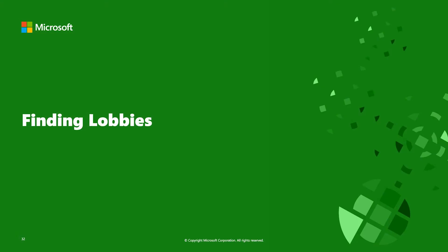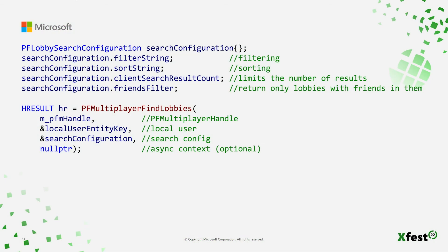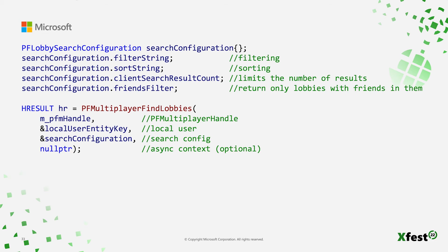Finding lobbies is a key feature of any lobby service. When searching, we can specify how to filter and sort results, limit how many results we get back, and even return only lobbies that have a user's friends in them. Once we get back the state change for the completed operation, we can iterate over results — each result includes the connection string, the host, how full the lobby is, any search properties, and an array of entity keys for friends already in that lobby.